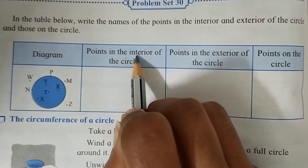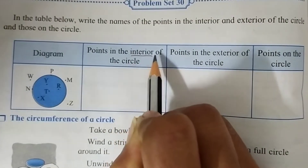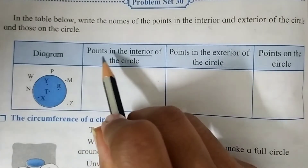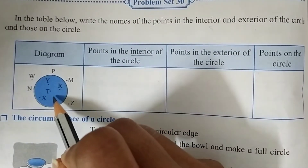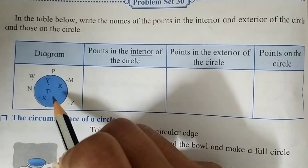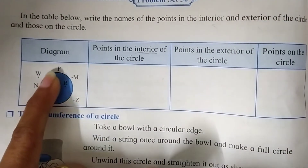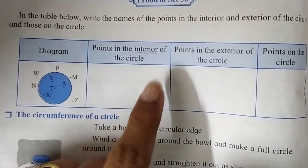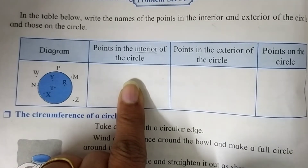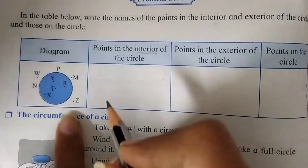Points in the interior of the circle — what is the interior of the circle? The interior of the circle means the area which is inside the circle. Here we can see the colored part of the circle. This colored area inside the circle is known as the interior of the circle. So when we have to find out the interior points of the circle, we have to look at inside the circle.